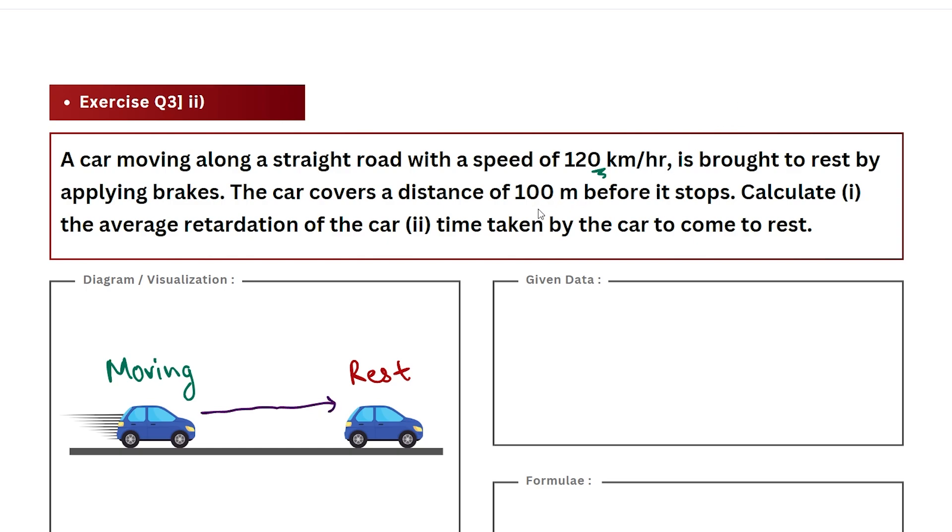That distance is given to us in the question. Based on these given values, they are asking us to find two quantities. First, the average retardation, and second, the time duration required for the car to transition from moving to rest phase. Basically, when we start the brake, how much time until the car finally stops.